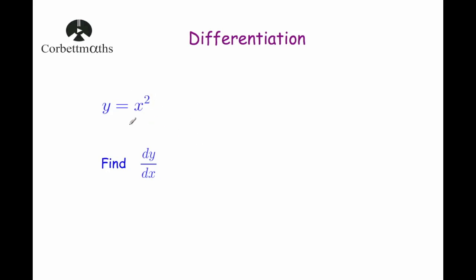Let's have a look at why. If we want to differentiate x squared, we look at the power, which is 2, and we bring that down. So it's going to be 2, then x, and then we look at the power. The power is 2, and when you reduce that by 1, 2 take away 1 is 1. So the answer would be 2x to the power of 1. We don't write something to the power of 1 because that's just x, so the answer is 2x.